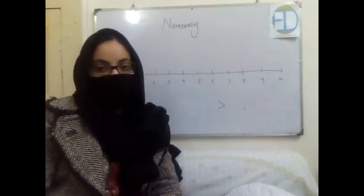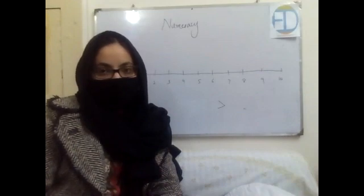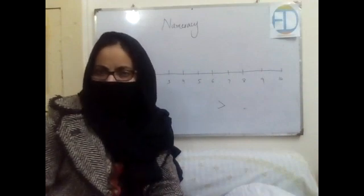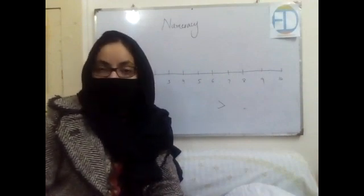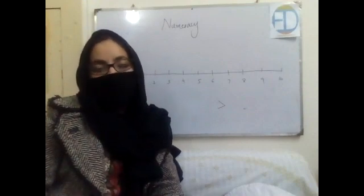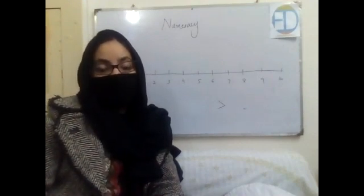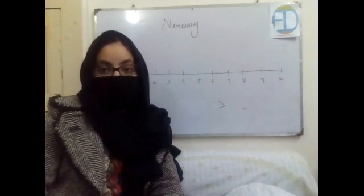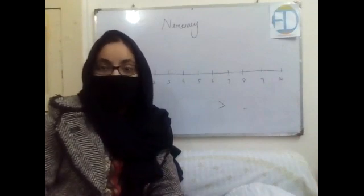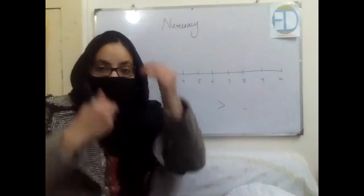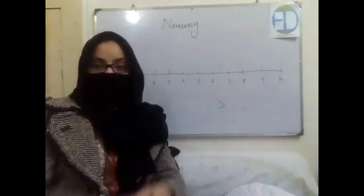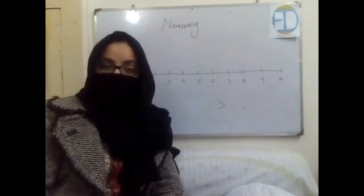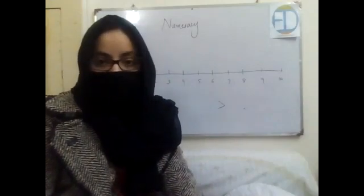What comes in between two and three? There is no number between two and three, so nothing. What comes after zero? One — spellings: O-N-E, one, excellent! What comes after nine? Ten — spellings: T-E-N, ten, excellent! What comes in between five and seven? Number six — spellings: S-I-X, six, excellent!